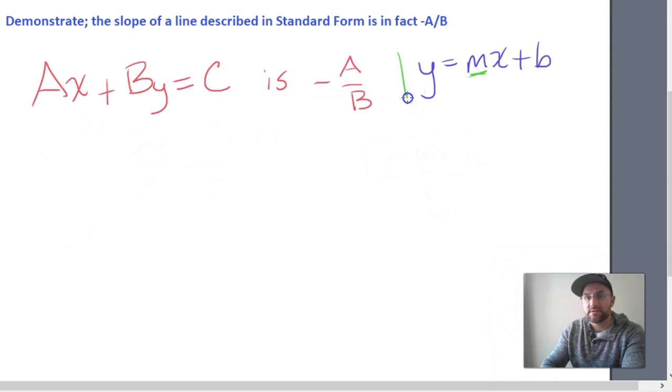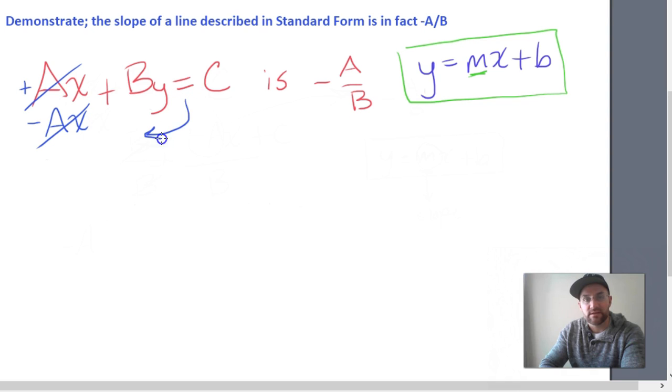Okay, we're looking for a similar format to this y equals mx plus b. So what we're going to do is go ahead and subtract Ax here because this is a positive Ax. So we're going to bring it to zero by subtracting Ax. Since we did something to this side of the equal sign, we need to do the same thing to this side.